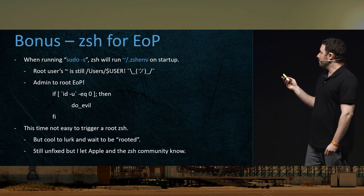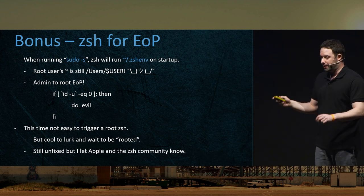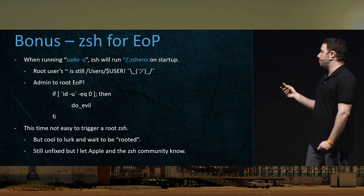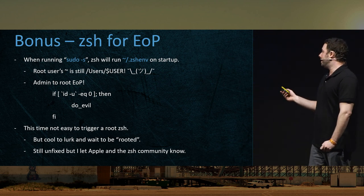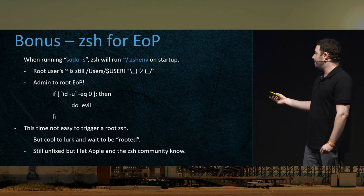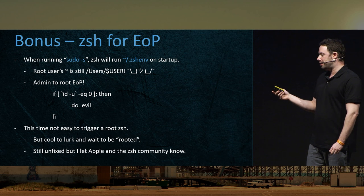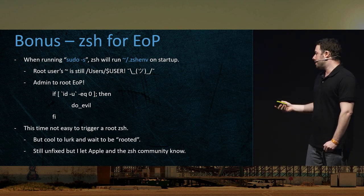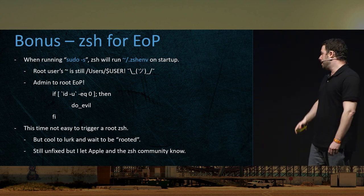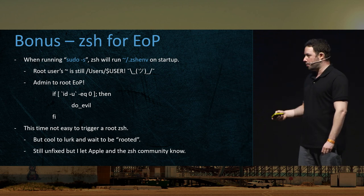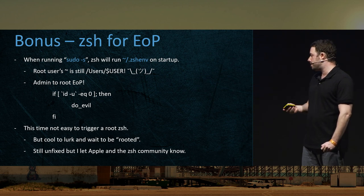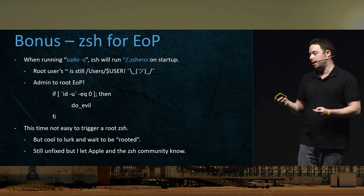There's a bonus round. I discovered that when you run sudo -s specifically on macOS, ZSH saves the home directory as-is from the admin — it doesn't change to /root like you're used to in Linux. That's kind of an admin-to-root EOP: do the same thing with the home directory .zshenv, and say 'if my effective user ID is zero, do whatever.' It wasn't easy for me to trigger a root ZSH, but it's cool to lurk and wait to be rooted. This is still unfixed, but I let Apple and the ZSH community know. It's not easy to trigger, but consider it a red teamer tactic.